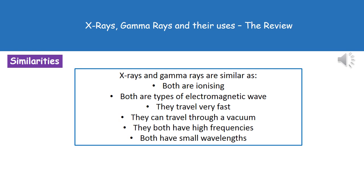When thinking about x-rays and gamma rays, they are actually quite similar to one another in a variety of ways. They're both ionizing, they're both types of electromagnetic wave, they both travel very fast, they can both travel through a vacuum, and they both have high frequencies and small wavelengths.